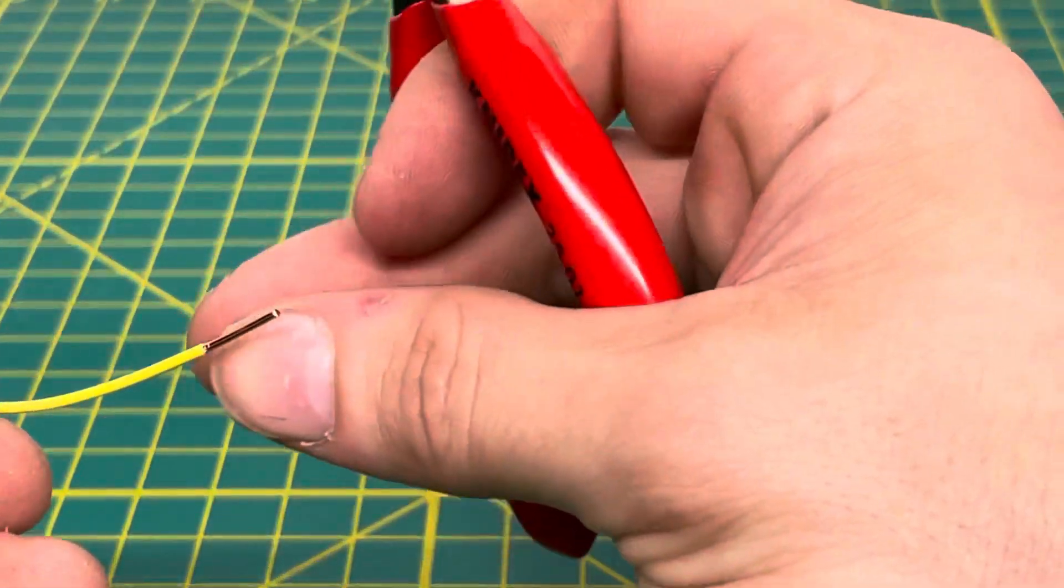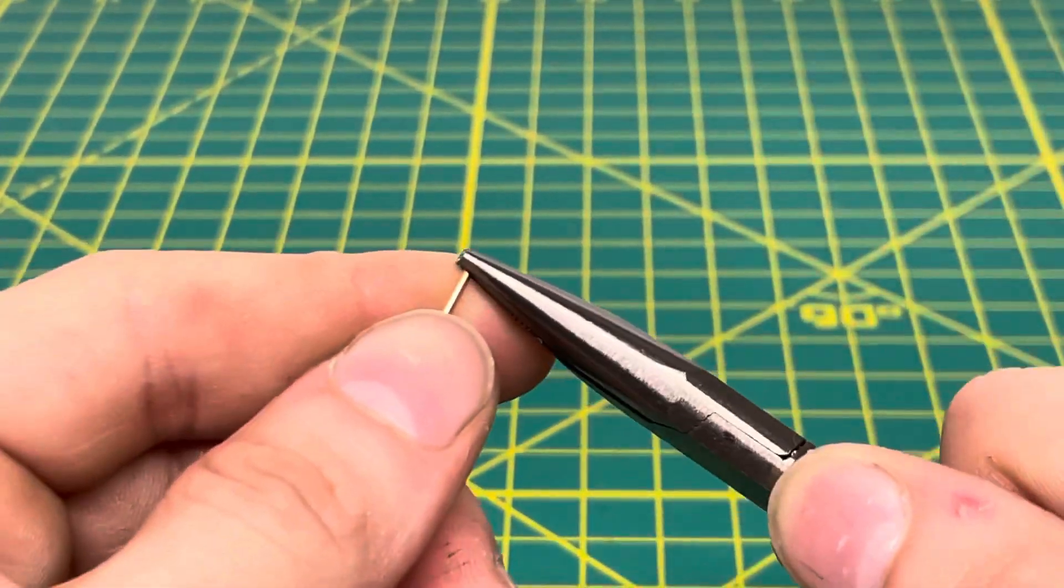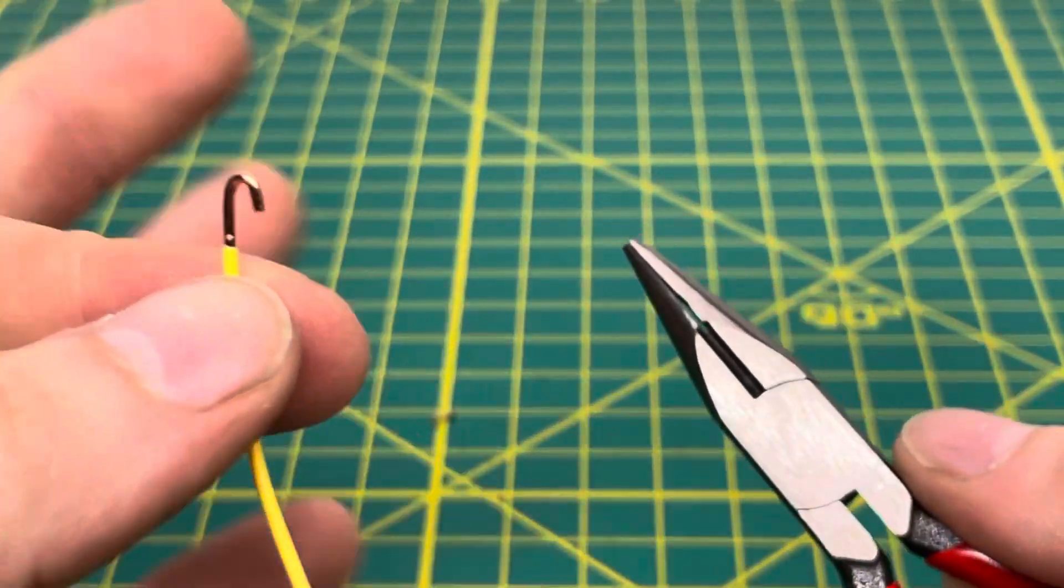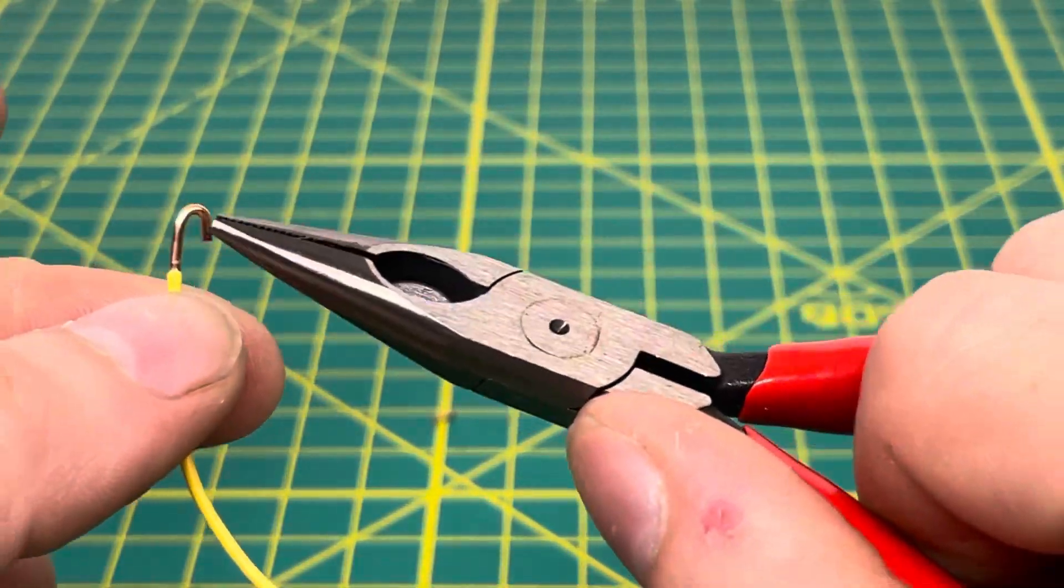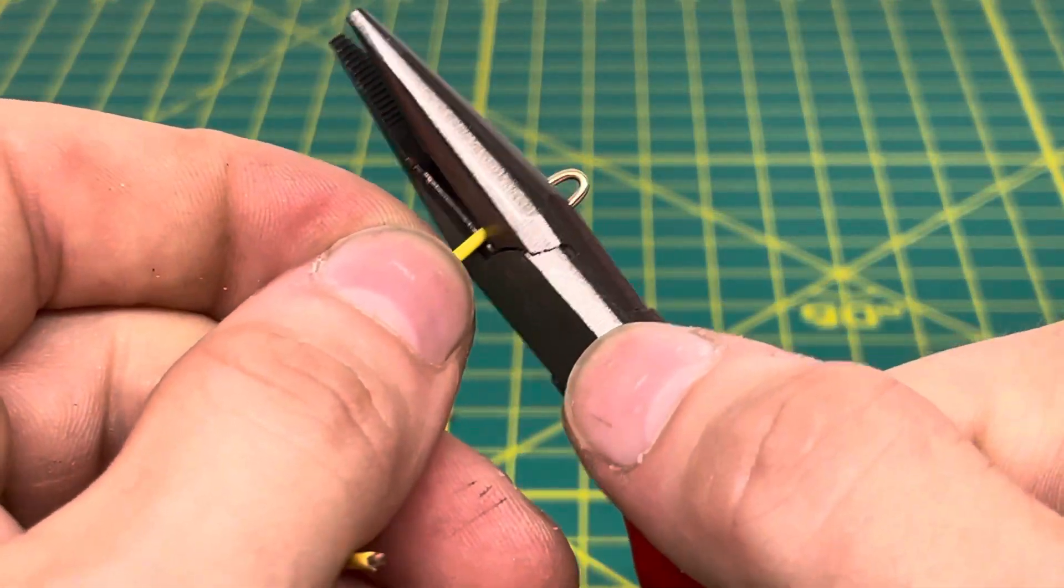Or maybe you just need to make a loop with these pliers. You can make a nice small little loop and then put a screw on there if you needed to, if your thermostat had that.